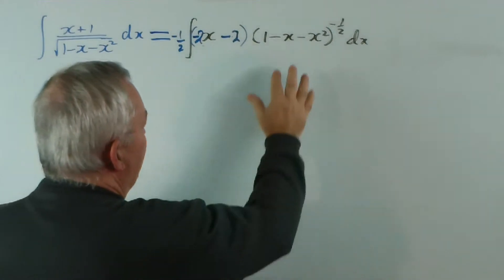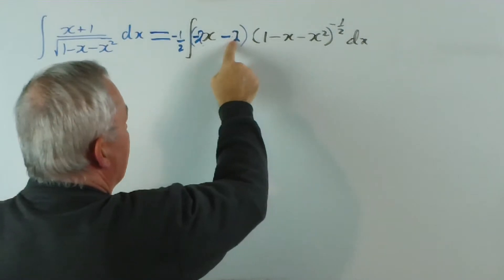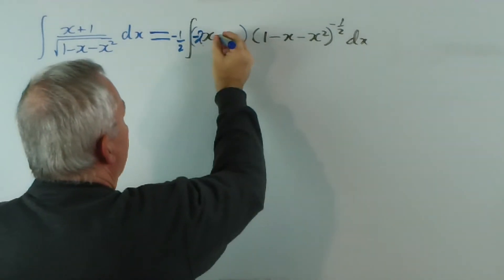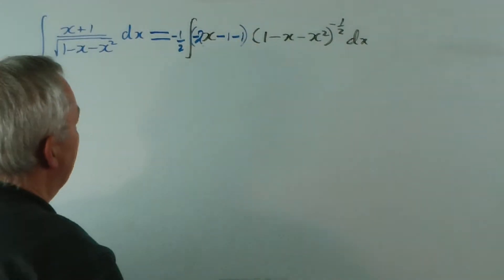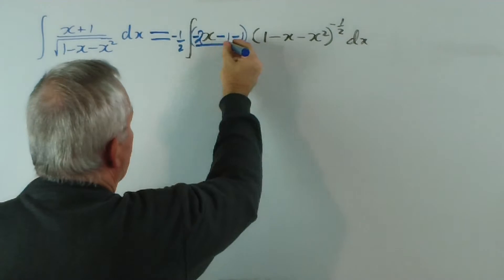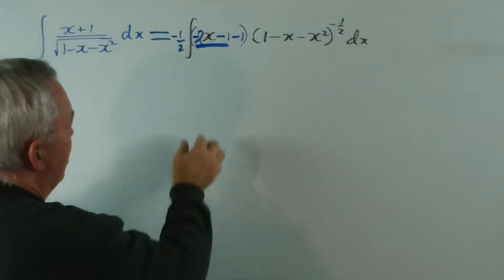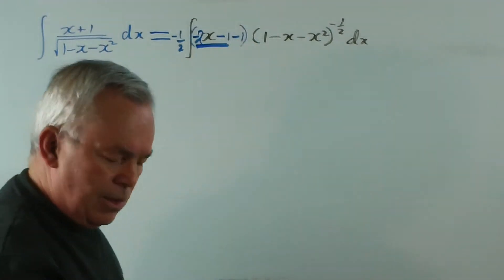Now, let's compare. The derivative of this is negative 2x minus 1. I'm going to break this minus 2 and 2, or negative 2, into this. Now, that's my negative 2x minus 1. So, I'm going to separate this and this into two separate integrals. And let's see what we get.